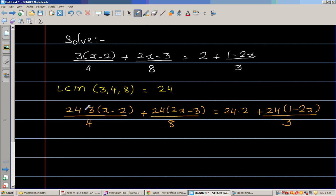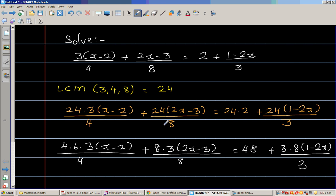You're dividing 24 by 4. I'll do one more step for you to understand. So 24 can be written as 4 times 6. So this is 4 times 6 times 3 times x minus 2 over 4. I'm doing more steps so that you don't need to do all these steps. Now the reason we are multiplying by 24 is to get rid of the denominators.